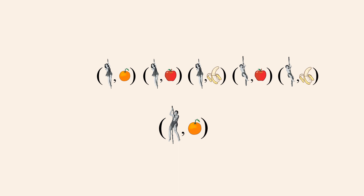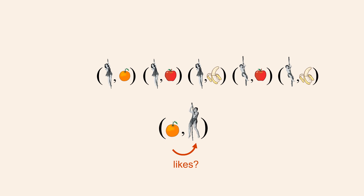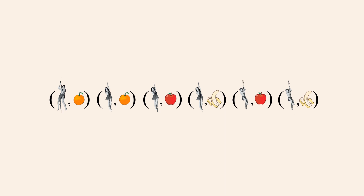For example, Tarzan likes oranges, but oranges don't necessarily like Tarzan. This collection of ordered pairs symbolizes associations from members of one set to members of another set. We call the set that contains these ordered pairs a binary relation.